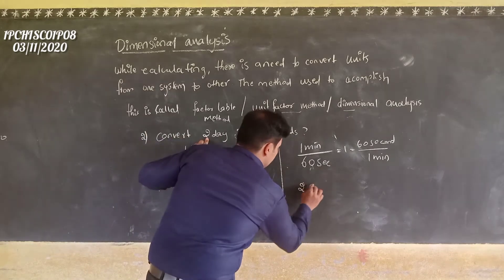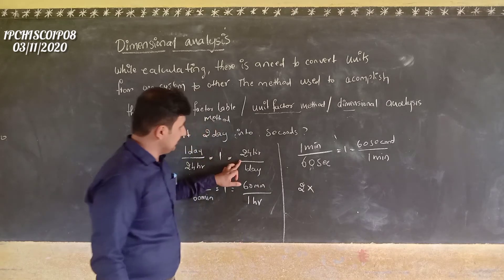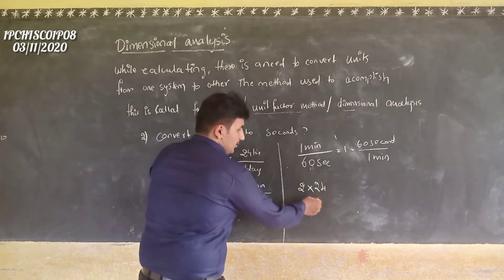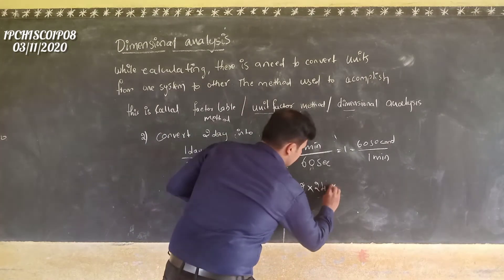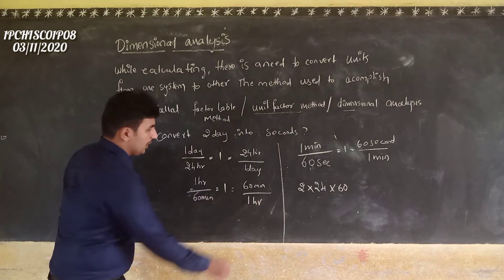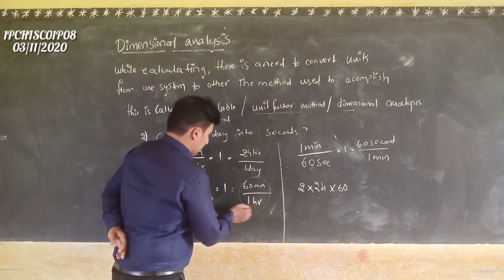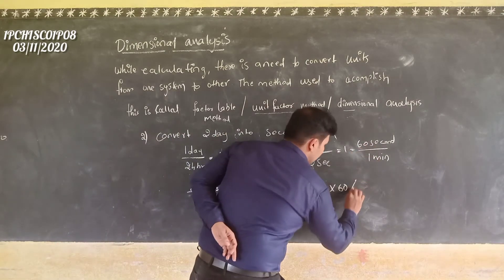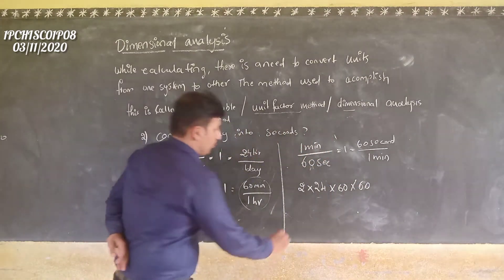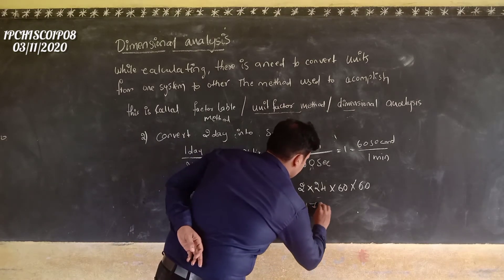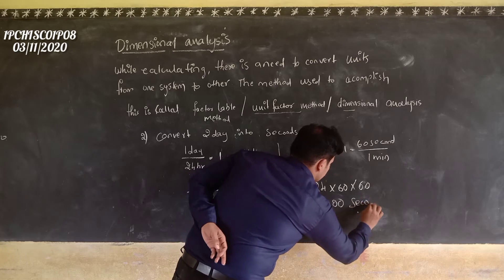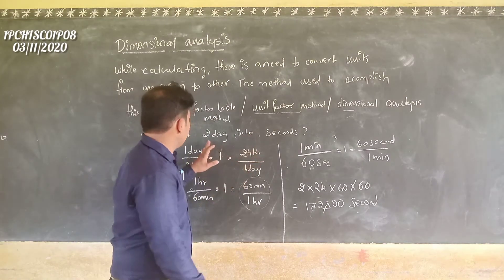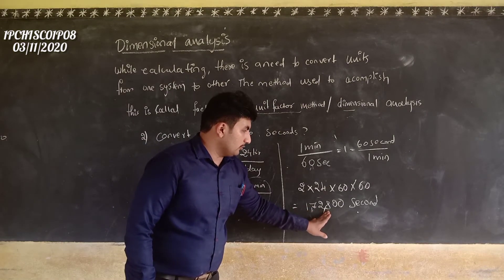Now, 2 days — we have to consider: 2 into 24 hours divided by 1 day, into 60 minutes divided by 1 hour, into 60 seconds divided by 1 minute. Multiplying all together gives 172,800 seconds. So 2 days equals 172,800 seconds.